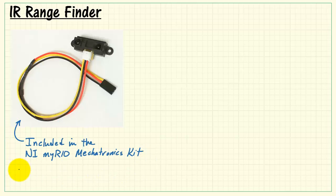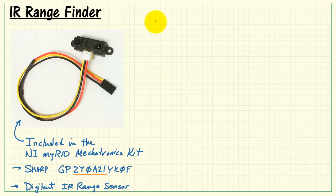This is the IR rangefinder that's included in the NI MyRio mechatronics kit. This is a product from Sharp, and this is what you actually see printed on the part itself: 2I0A21. This is also known as the Digilent IR range sensor.